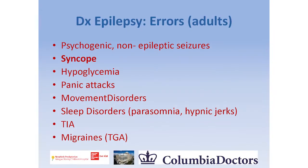When looking at the diagnosis of epilepsy where errors are made in adults, the two most common are psychogenic non-epileptic seizures and syncopal events. Those are the two most common things that get diagnosed as epilepsy but aren't.